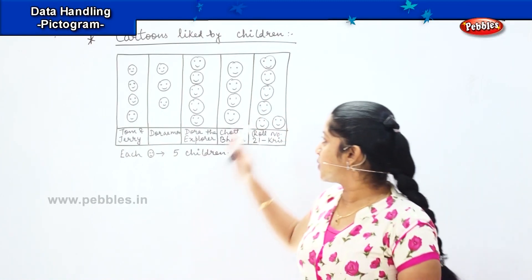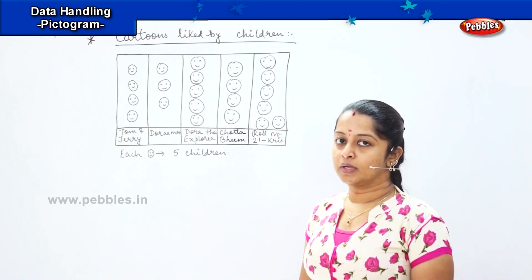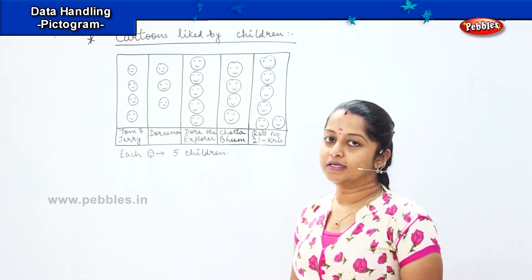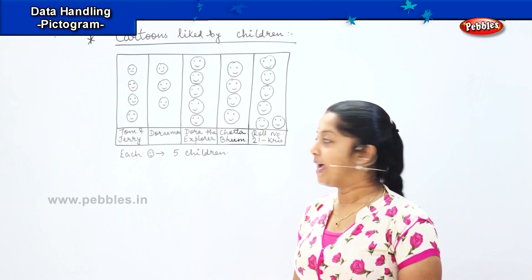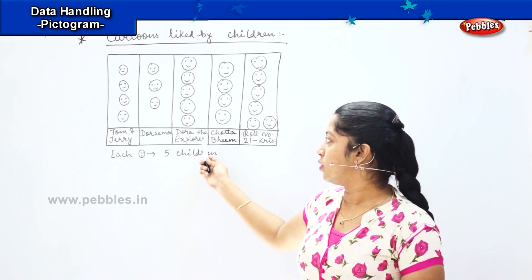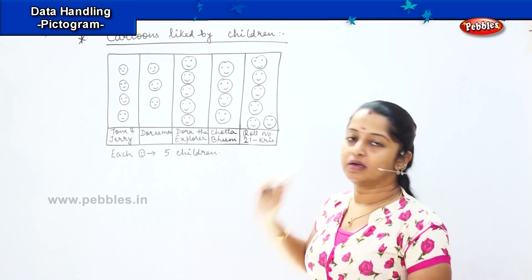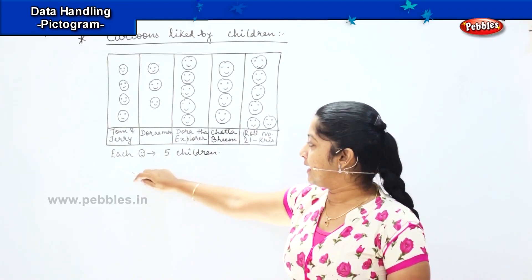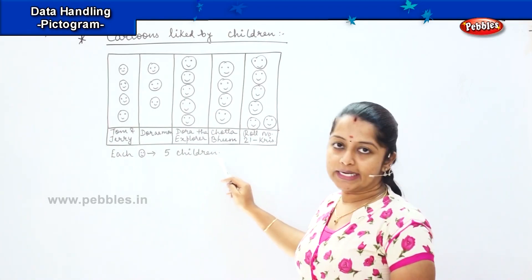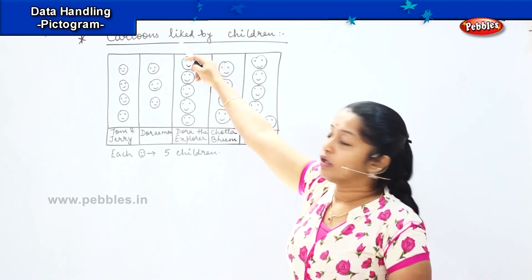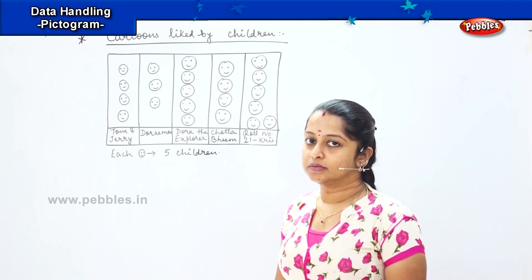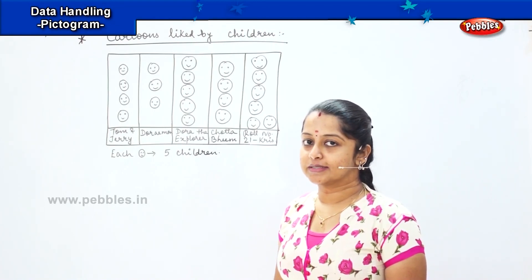Shall we do some more to understand it better? Can you see the next question? This is a table which shows the cartoons liked by children in general. We have cartoon serials like Chhamanjuri, Doraemon, Dora the Explorer, Chhota Bheem and Krish. Here each smiley represents five children — this is my key detail, and my title is 'Cartoons Liked by the Children'. Are you ready for the questions?